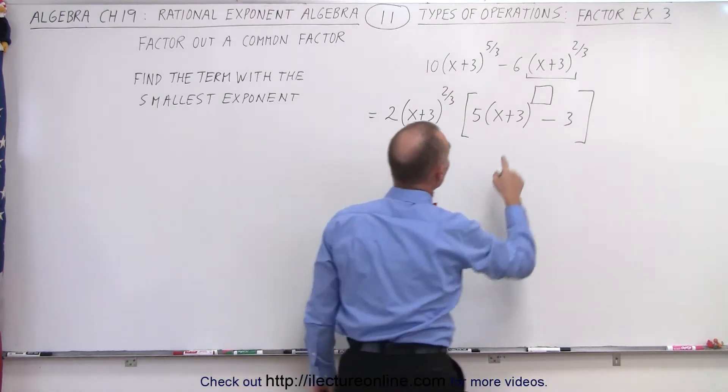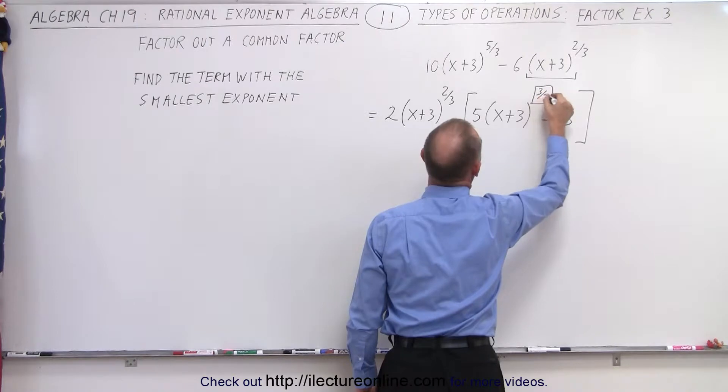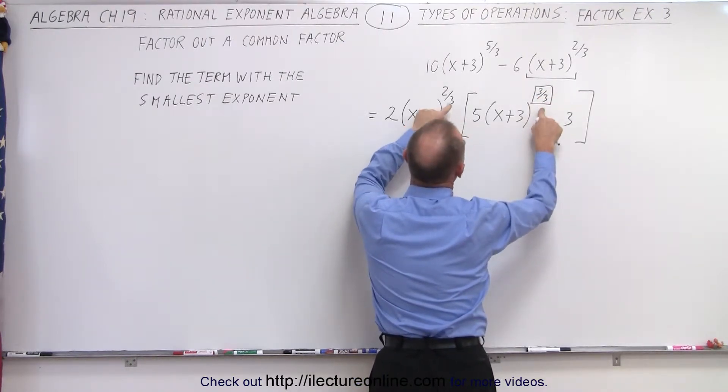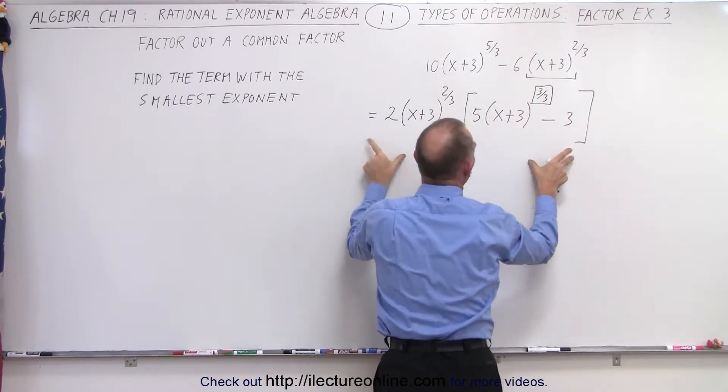What will give you that exponent back? How about 3/3? Because when you multiply these together, you add the exponents. 2/3 + 3/3 = 5/3, and that will then be the factored form.